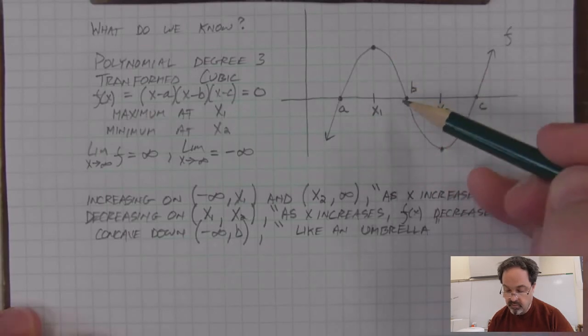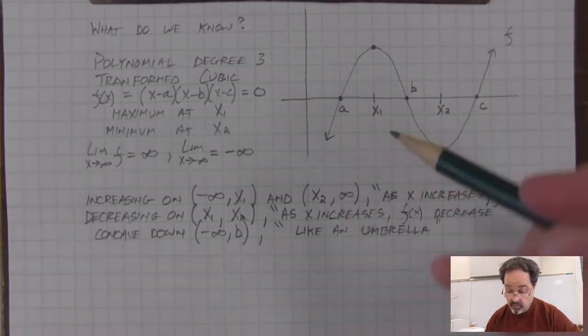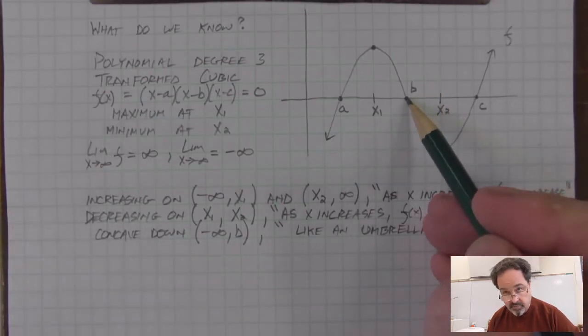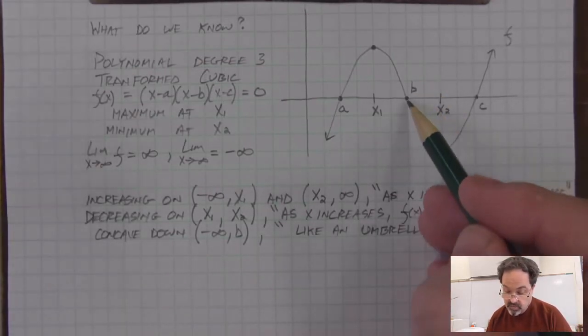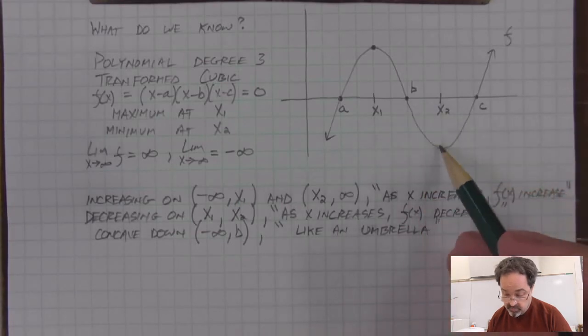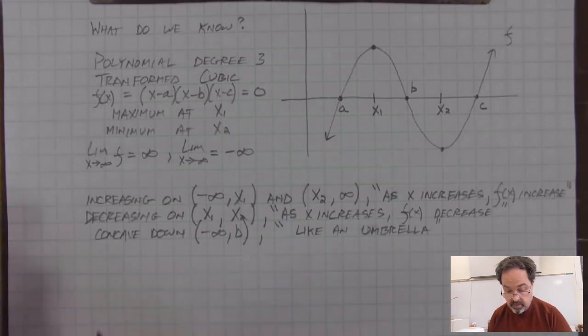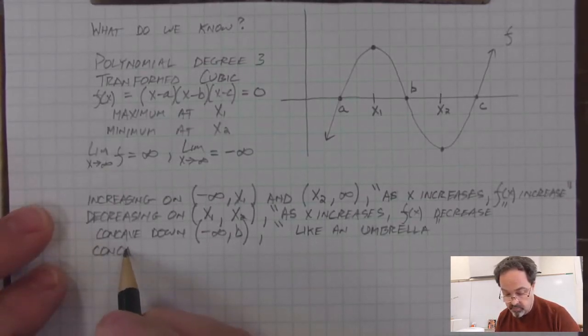And at this point here, the concavity changes because it becomes concave up. Informally, we could think of it like a bowl. And it is concave up on an interval.